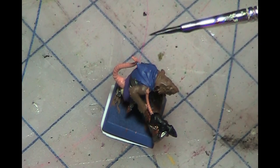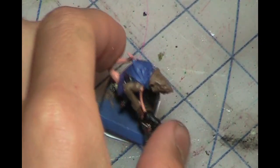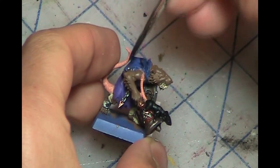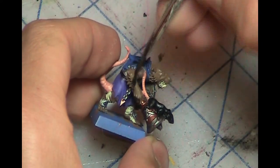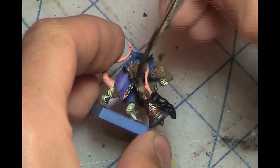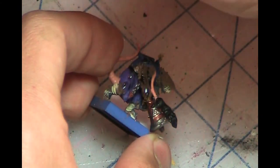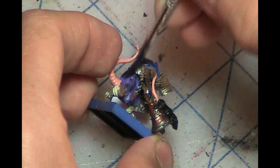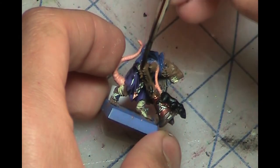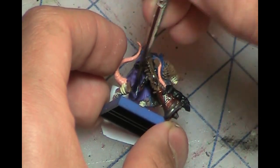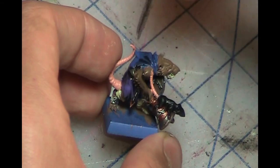So here I have my Nuln Oil, and I'm just going to take it and slap it on the whole model except for the rat's tail. I mean you can do that, but I prefer to use Reikland Flesh Shade for that. It just gives it a crisper look than if it was to be shaded darker.